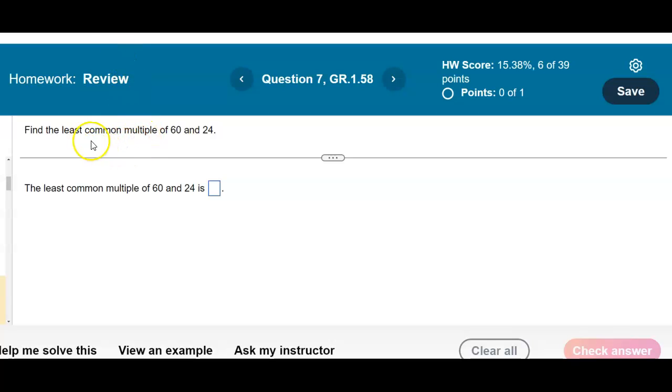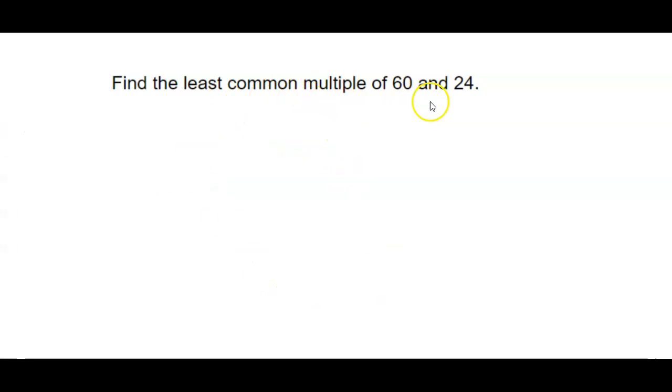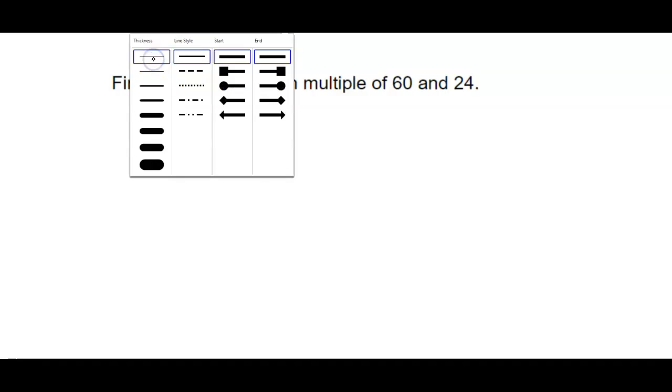In this next example we want to find the least common multiple of 60 and 24. Finding the least common multiple is the same thing as finding the least common denominator. So what we want to do is find the least common multiple of 24 and 60.